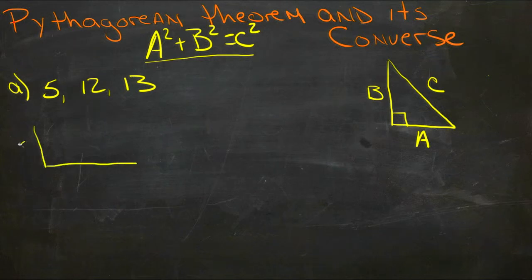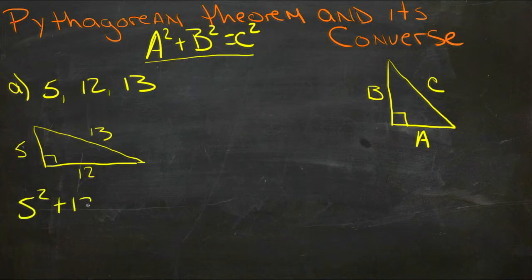So our triangle has sides of 5, 12, and 13, and if this is a right angle triangle, then 5 squared plus 12 squared should equal 13 squared.